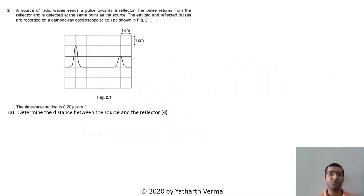A source of radio waves sends a pulse towards a reflector. The pulse returns from the reflector and is detected at the same point as the source. The emitted and reflected pulses are recorded by a CRO. So what's happening is a source of waves is producing a wave which is going towards a reflector and returning back at the same point.